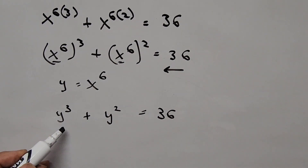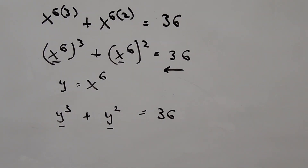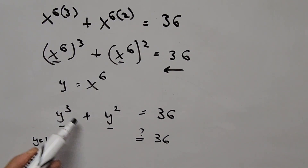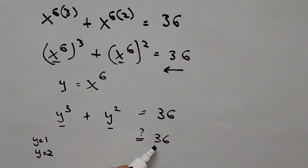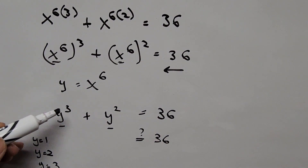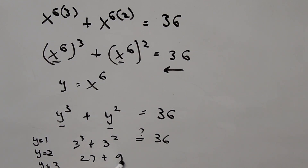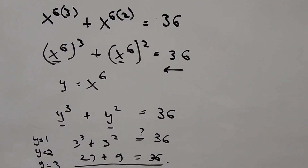To find an initial value of y we use guess-and-check. If y = 1: 1 + 1 = 2, not 36. If y = 2: 8 + 4 = 12, not 36. If y = 3: 3 cubed is 27, plus 3 squared is 9, and 27 + 9 = 36. So y = 3 is a root.